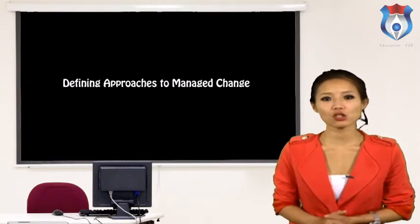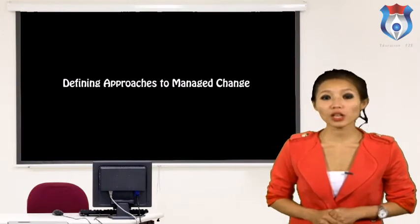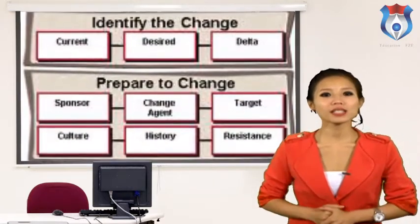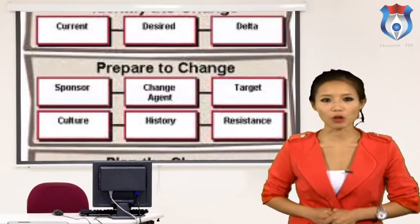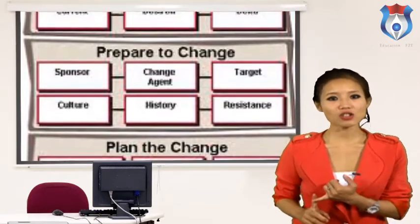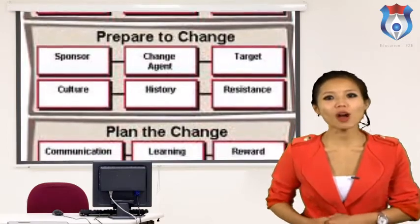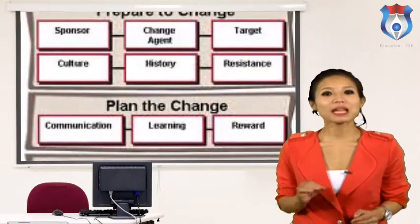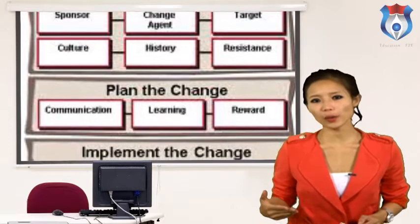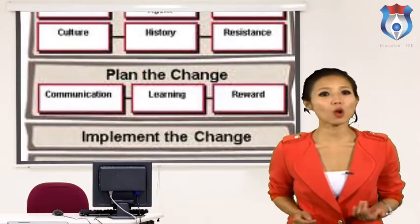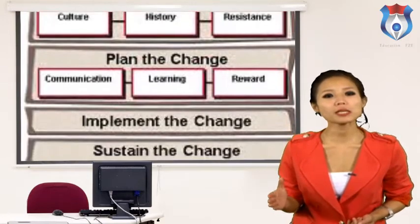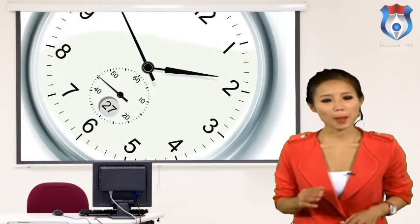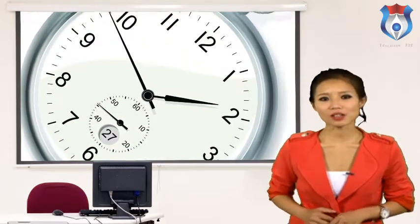Defining approaches to manage change. There are basically three approaches to manage change, which must be defined for properly understanding the concepts of organizational change and development. These include intervention theory and method. According to Argyris, the founder of the intervention theory and method, intervention is to enter into an ongoing system of relationship to come between or among persons, groups, or objects for the purpose of helping them. There are three types of intervention activities that are made use of to accomplish these tasks of intervention theory.